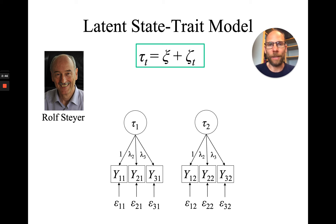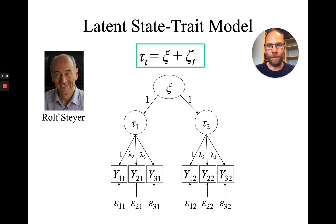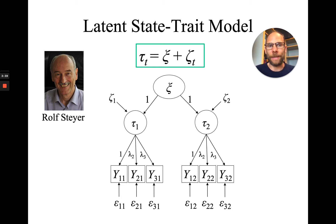How can we turn a conventional confirmatory factor analysis model into a latent state trait model? With two measurement occasions — two states tau 1 and tau 2 — we can derive an equivalent model with the same fit and degrees of freedom by introducing a structural equation with a second-order factor psi, which is the trait factor. The trait factor accounts for the covariance across time: what was previously estimated as the covariance between tau 1 and tau 2 now goes into the variance of the trait. The variance of this trait will equal the covariance of those state factors. In addition, the structural equation includes so-called state residuals zeta, which characterize residual variance in the latent state factors tau 1 and tau 2 after accounting for the trait.